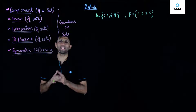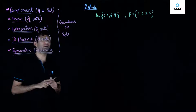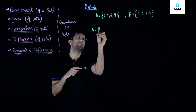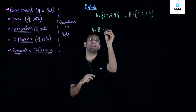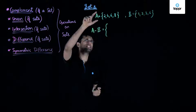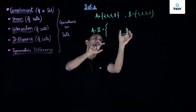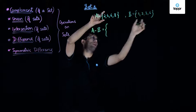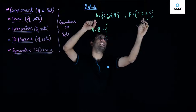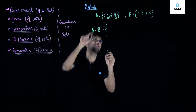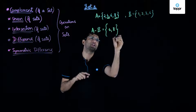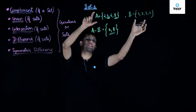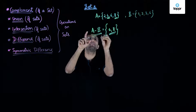The next operation on sets is that of difference of sets. Difference of two sets A and B, denoted by A minus B, is defined as the set consisting of all elements that are present in A but not in B. Identifying those elements: 4 is present in set A but not in set B, and similarly 8 is present in A but not in B. So A minus B consists of the two elements 4 and 8.